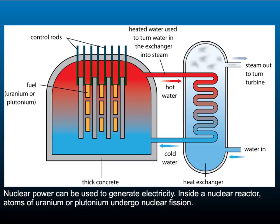Nuclear fission is the process used within nuclear power plants. The fuel is usually uranium or plutonium, and it's placed in the form of fuel rods within the reactor core. The reactor core is surrounded by thick concrete to prevent the release of any radiation. Within the core there are also control rods, which are made from a substance that can absorb neutrons.